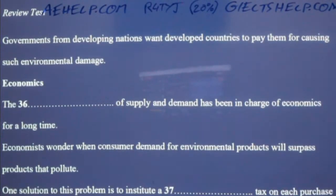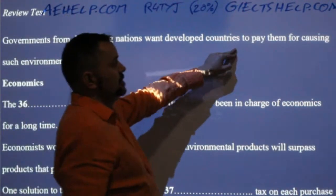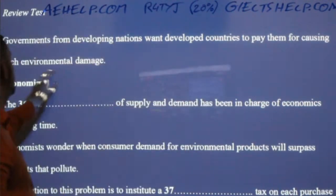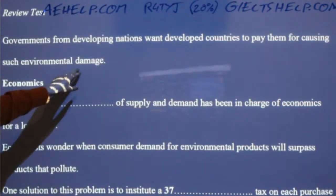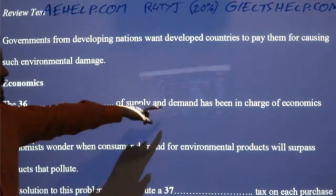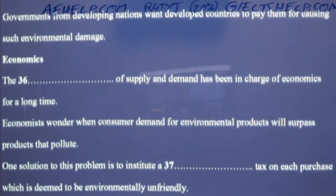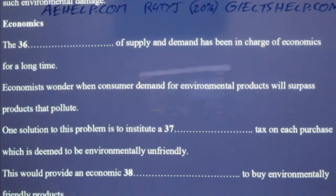Governments from developing nations want developed countries to pay them for causing such environmental damage. The something of supply and demand has been in charge of economics for a long time. This was a little bit tricky — two words.